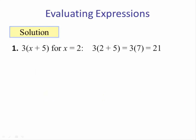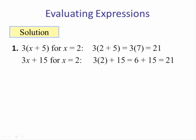For number one, substituting x equals two: we get three times the quantity two plus five. We combine inside to get seven, then three times seven is twenty-one. For the other expression, three times two plus fifteen — order of operations says multiply first, giving six, then add fifteen. The answer is again twenty-one. These are the same.